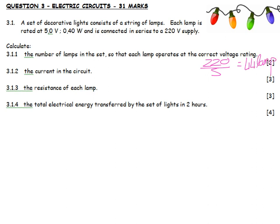What will the current in the circuit be? I've got information about each lamp, so the current is going to be power equals V times I. The power is 0.4, the potential difference is 5, so the current turns out to be 0.08 amps.